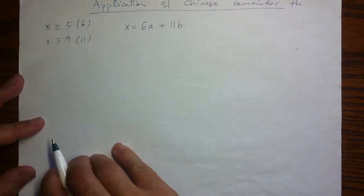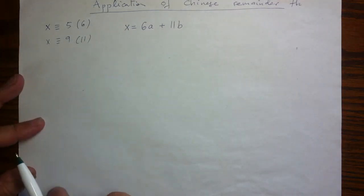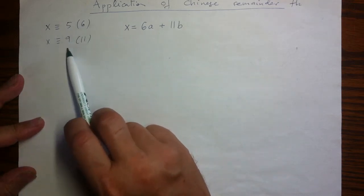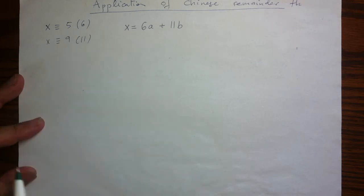In particular, our unknown x. In this form, the conditions we have, that the congruences mod 6 and 11 are what they are, become conditions on these coefficients a and b.